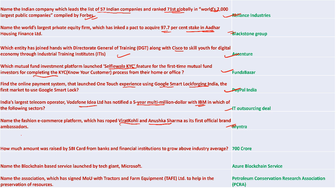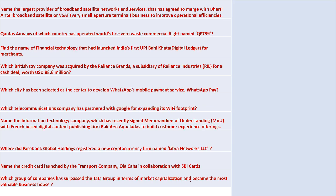Vodafone, India's largest telecom operator, signed a five-year multi-million dollar deal with IBM. Mantra roped in Virat Kohli and Anushka Sharma as their first official brand ambassadors. SBI Card raised 700 crore from banks and financial institutions to grow above the industrial average. Microsoft launched a blockchain-based service called Azure. Petroleum Conservation Research Association (PCRA) signed an MOU with Tractor and Farm Equipment - the brand ambassador can be shared in the comment section.